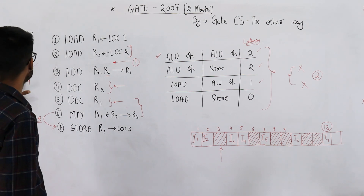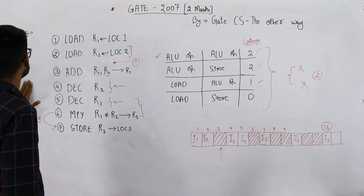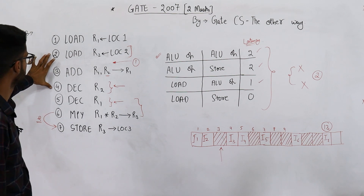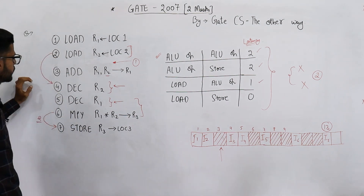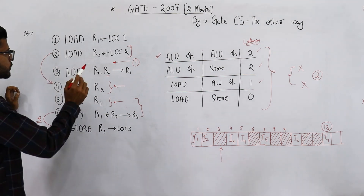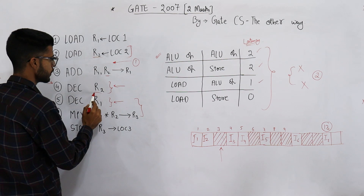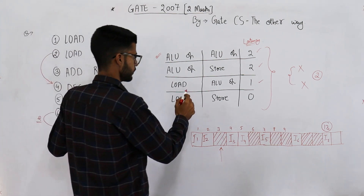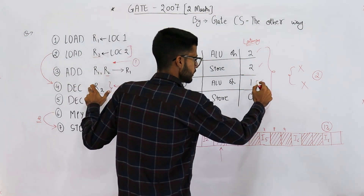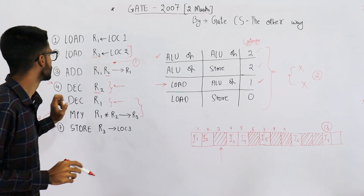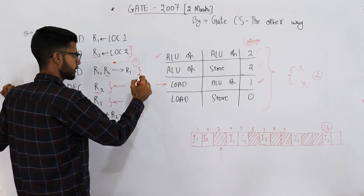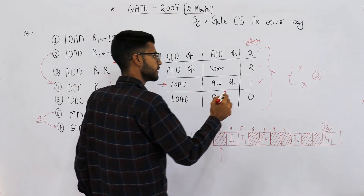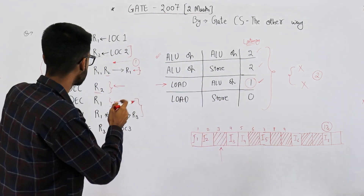One more thing to note: there might be dependencies between instructions that are far apart. For example, load (instruction two) produces R2 and decrement R2 (instruction four) uses R2. But load-to-ALU requires a latency of only one clock cycle, and instruction three is already placed between two and four, so that latency is automatically taken care of by the code itself.